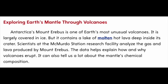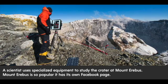Exploring Earth's mantle through volcanoes. Antarctica's Mount Erebus is one of Earth's most unusual volcanoes. It is largely covered in ice, but it contains a lake of molten hot lava deep inside its crater. Scientists at the McMurdo Station Research Facility analyzed the gas and lava produced by Mount Erebus. The data helps explain how and why volcanoes erupt, and can also tell us a lot about the mantle's chemical composition.